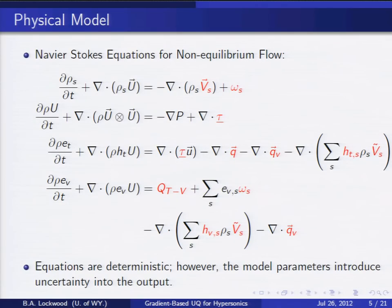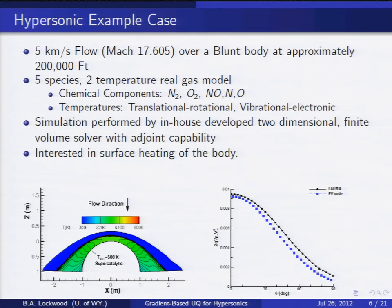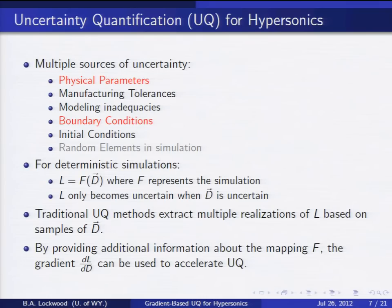To solve for these kinds of flows, we have extra terms and constitutive relations that depend on our model parameters — that's where the uncertainties come in. The test case I use throughout this work is a 5 km/s flow over a blunt body, in this case a cylinder. It's a five-species, two-temperature model, and I wrote the solver from scratch in order to add the adjoint. Integrated surface heating is always my objective. Here you can see the flow: the flow direction comes in, there's a nice bow shock in front of the cylinder, and the surface heating plot agrees well with the NASA code.